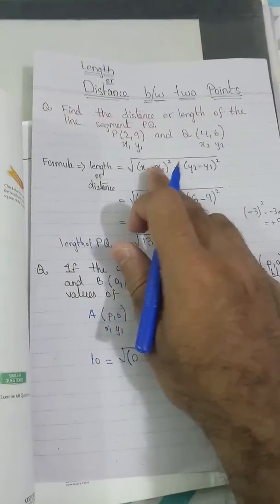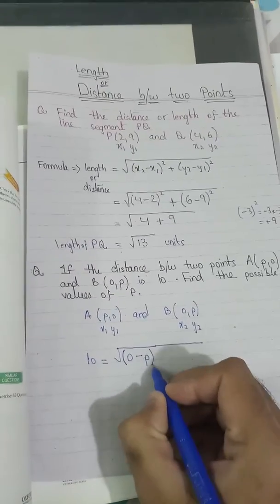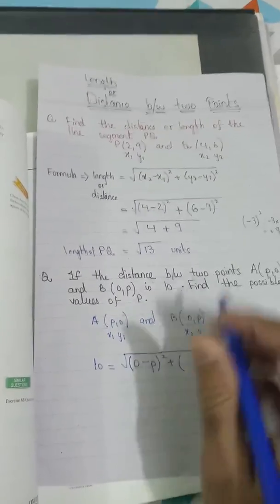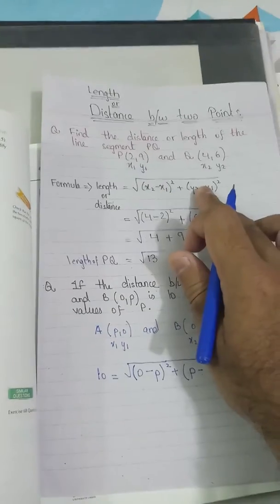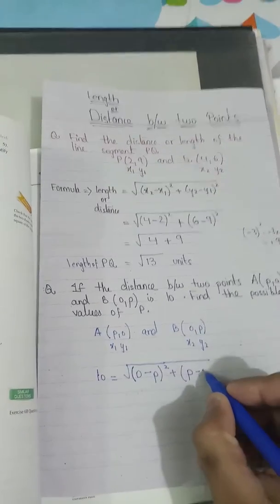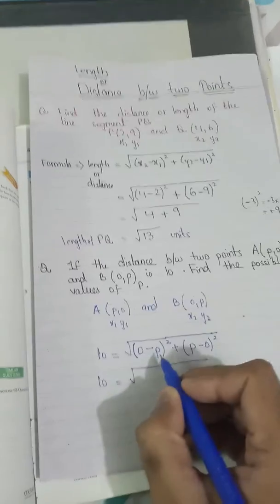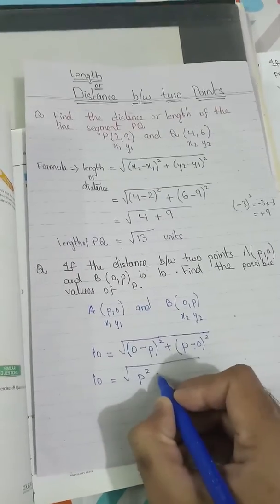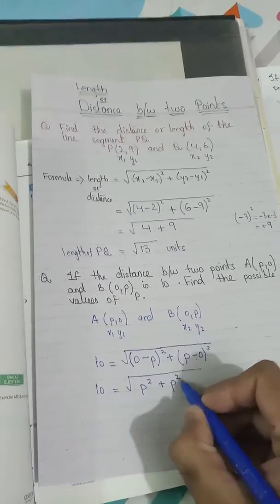After 0, the negative sign and x1 — the value of x1 is p — so I write p, then close the bracket and square it, then a positive sign. For y2, the value is p, so I write p, then subtract y1 which is 0, and square it. So now 10 equals square root of (0 minus p) squared, which is p squared, plus (p minus 0) squared, which is also p squared.